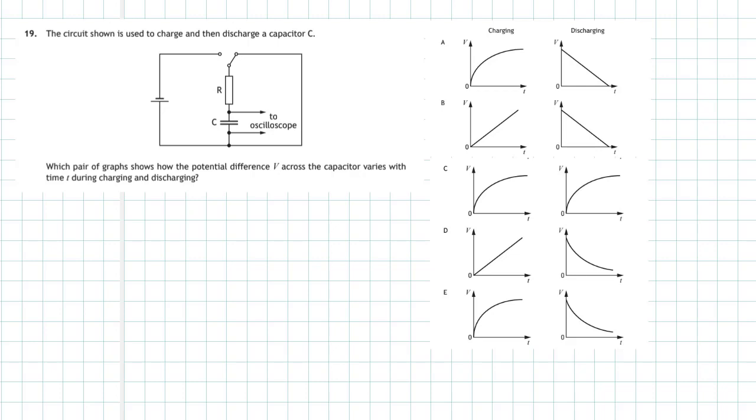When the switch is put into this position, the capacitor will begin to charge up. Electricity will flow around the circuit, electrons will leave the battery and build up on the capacitor.